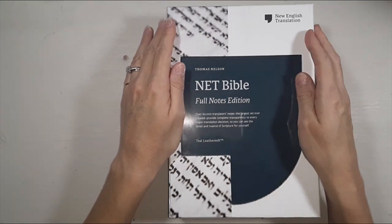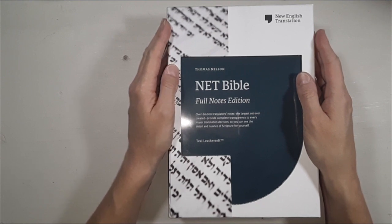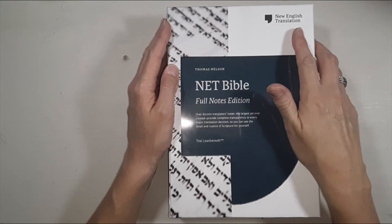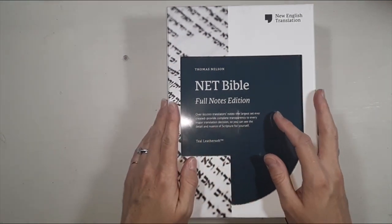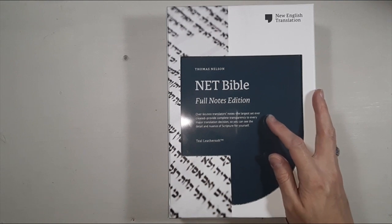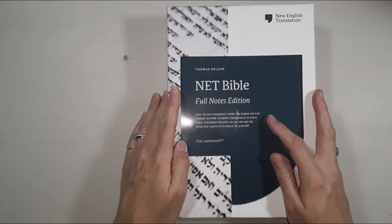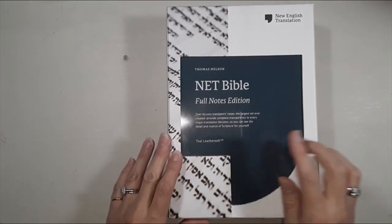Let's go ahead and dig into this beautiful Bible. This is the Thomas Nelson NET Bible Full Notes Edition, so it's New English Translation, and this has over 60,000 translator's notes, the largest set ever created, providing complete transparency to every major translation decision so you can see the detail and nuance of scripture for yourself.